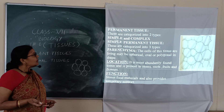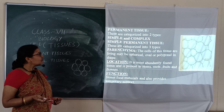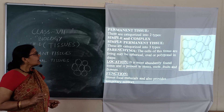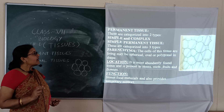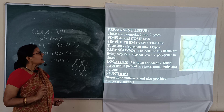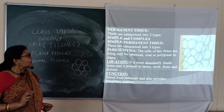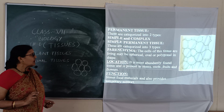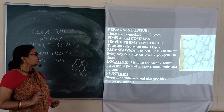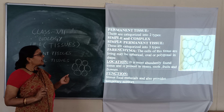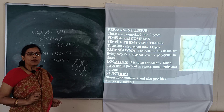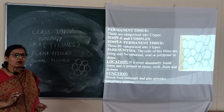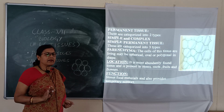Next is permanent tissue. Permanent tissue means they lack the ability to divide. They are of two types: simple permanent tissue and complex permanent tissue. Simple permanent tissue is of three types: parenchyma, colenchyma, and sclerenchyma.